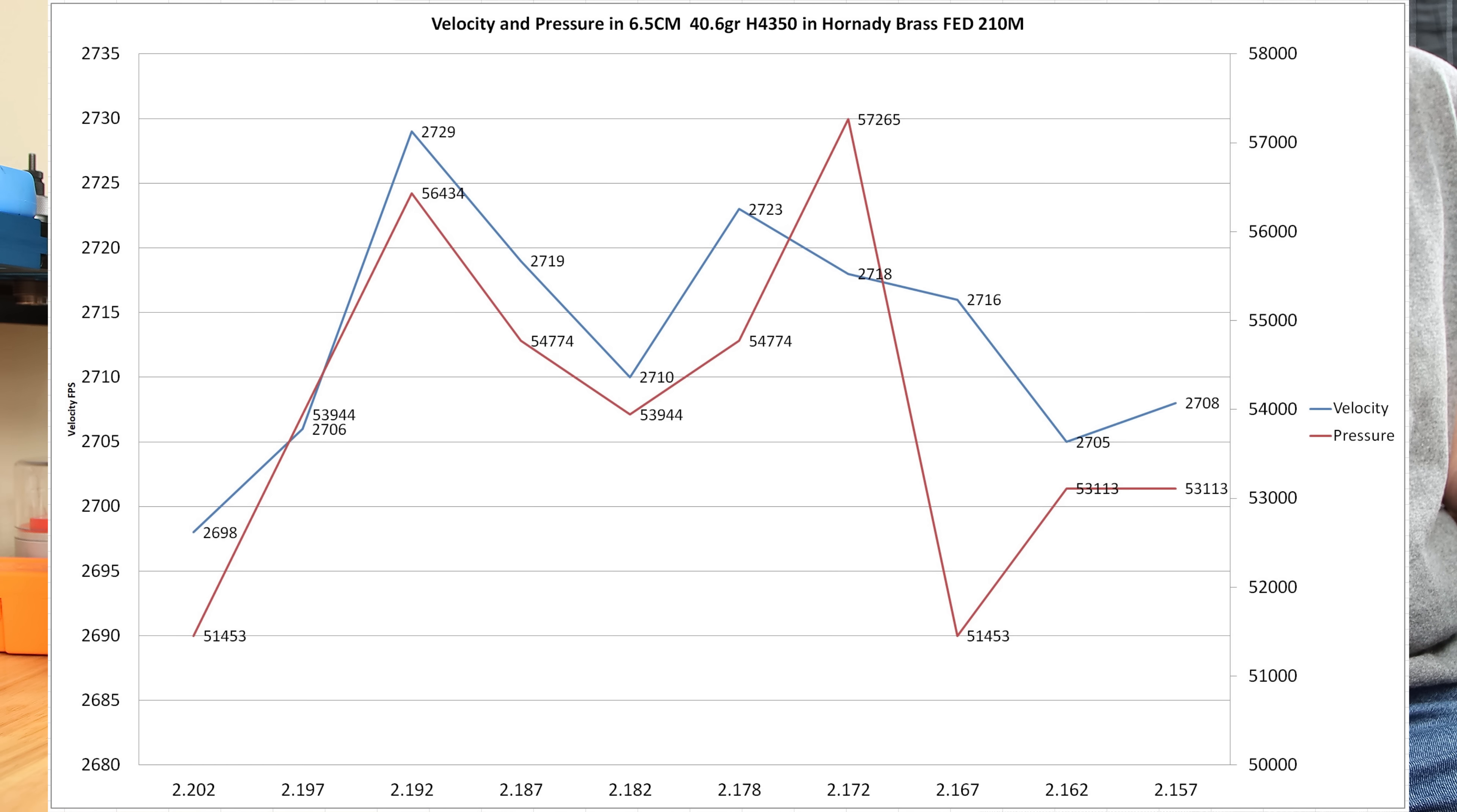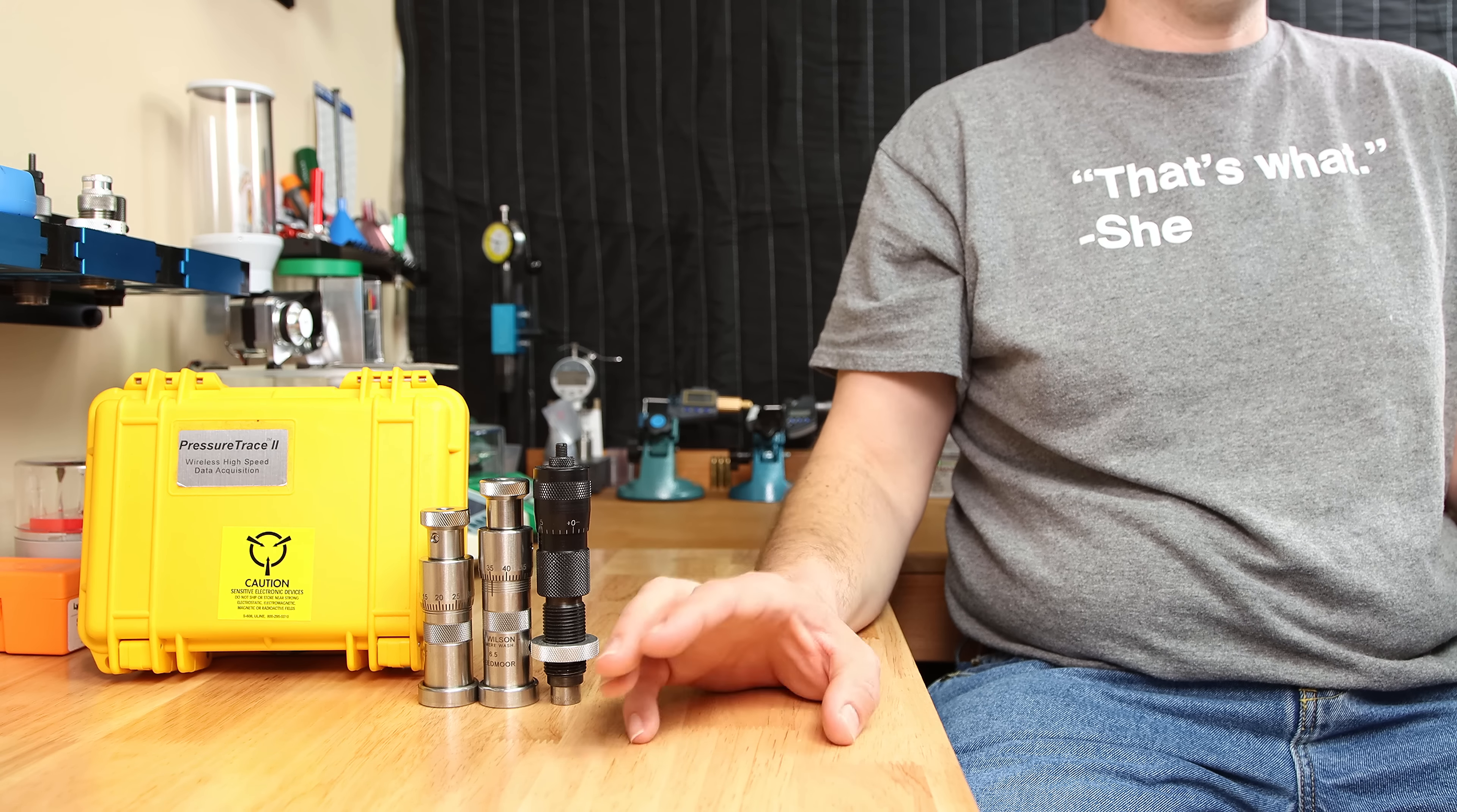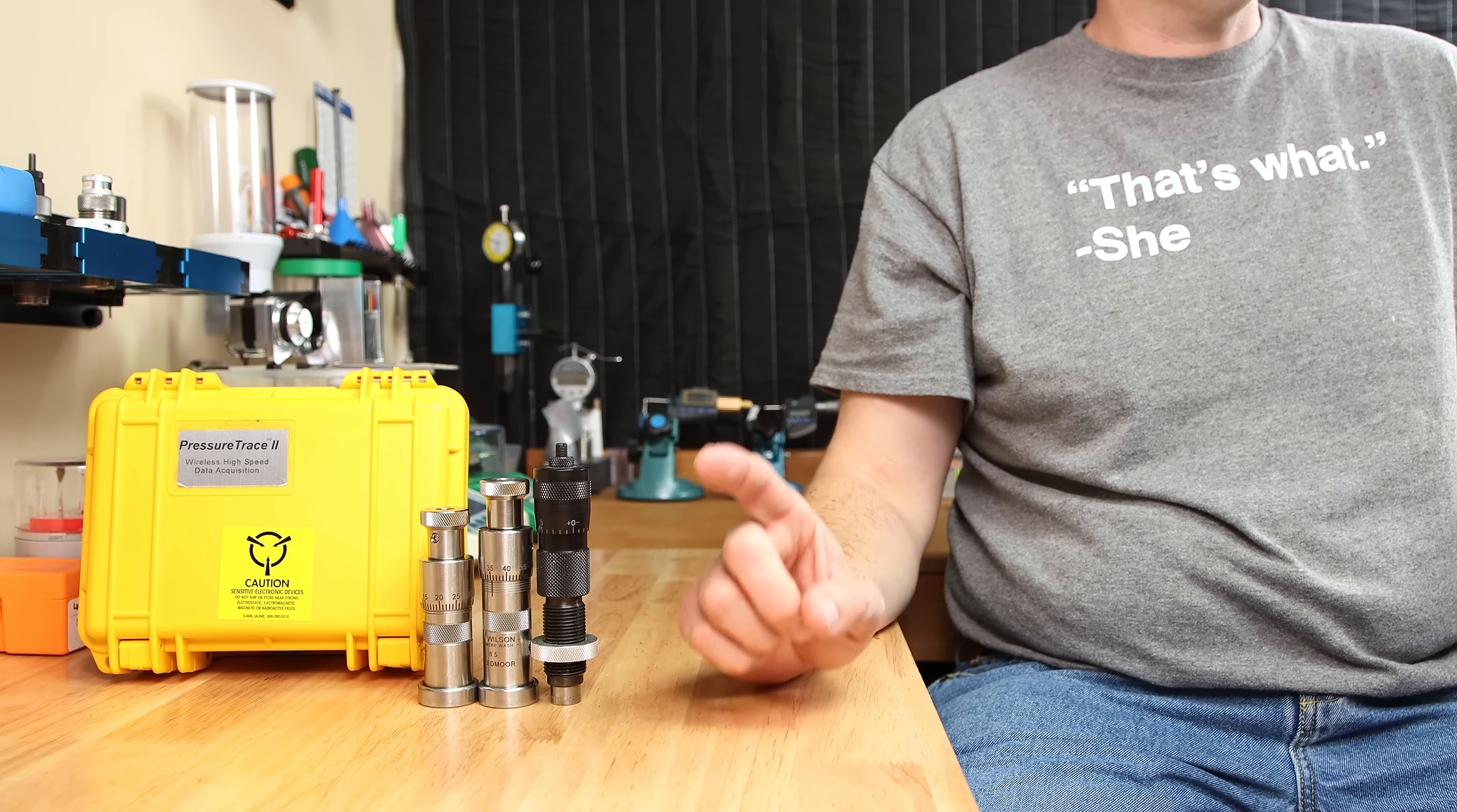Looking at the chart, we can see the highest velocity we saw was 2729 feet per second at only 56,434 psi. Not really significantly higher, but it would have been much more interesting had those first two rounds been on a warm barrel. But never fear, I believe .223 is going to give us some much more interesting data.